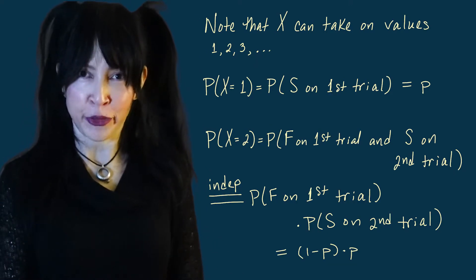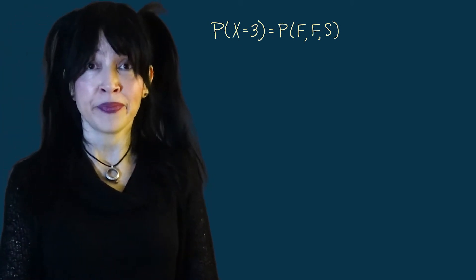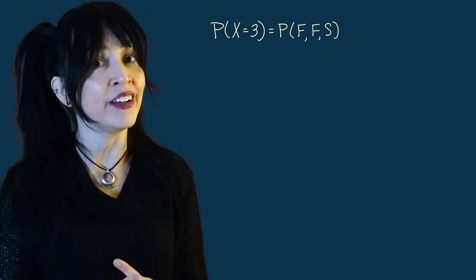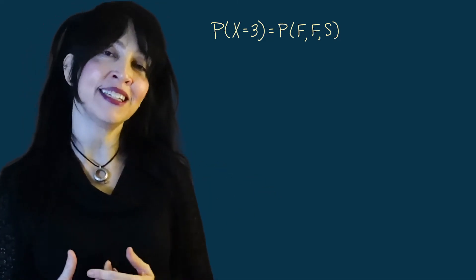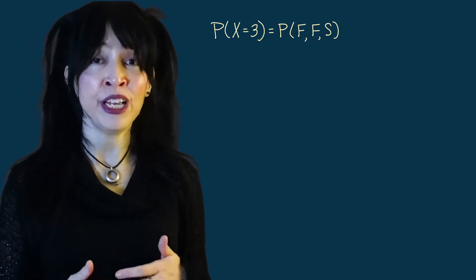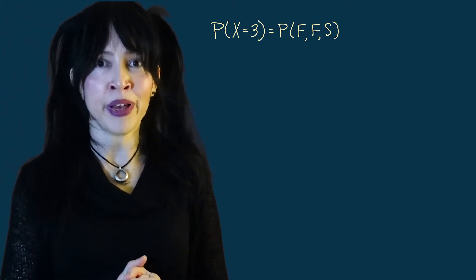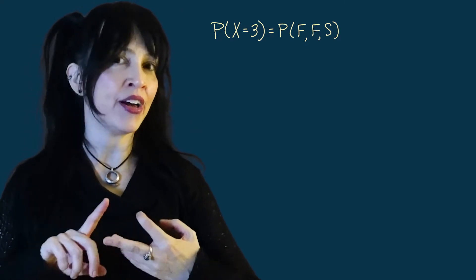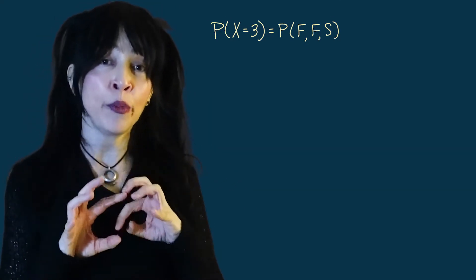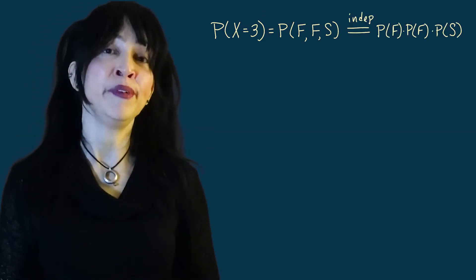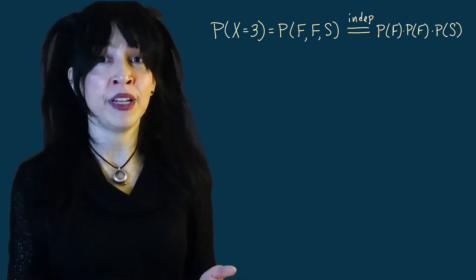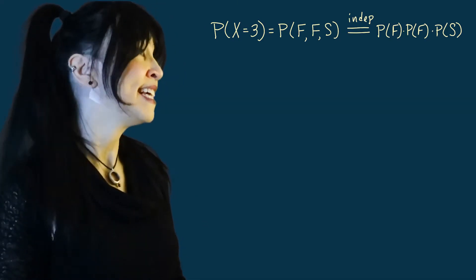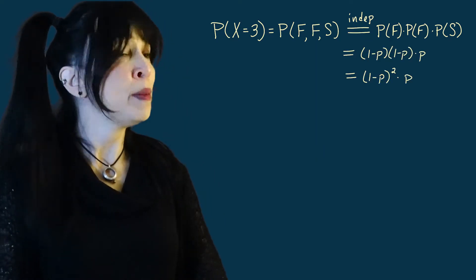Let's do one more and catch the pattern. The probability that X equals three means failure on the first trial, failure on the second trial, and success on the third — which I'll write compactly as FFS. By independence of the trials, we break this into a failure probability, a failure probability, and a success probability. Those probabilities stay the same from trial to trial, so we end up with one minus p squared times p.